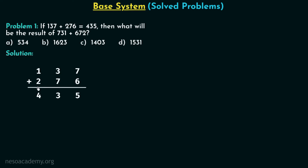Let us analyze this addition: 137 added with 276 giving 435. We shift focus to the digits at the ones place. 7 is the digit of the first number and 6 is the digit of the second number at ones place. When we add 7 and 6 we get the intermediate sum equal to 5. The contribution by 7 and 6 together is 13.